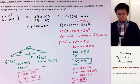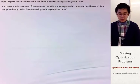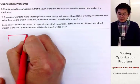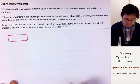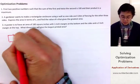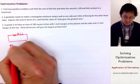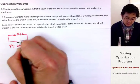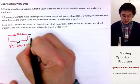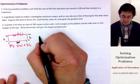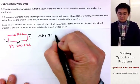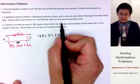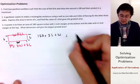Now let's answer problem number two. A gardener wants to make a rectangular enclosure using a wall as one side and 120 meters of fencing for the other three sides. The wall forms one side, so the fencing equation is 2L plus W equals 120. The second equation is the area, L times W, which needs to be maximized.